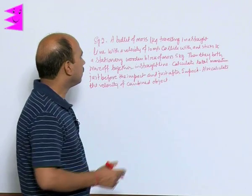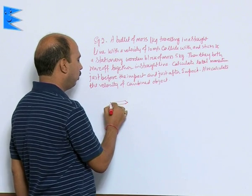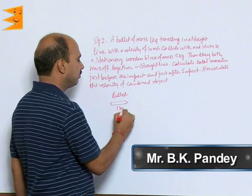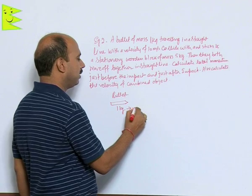So, see here, the bullet is coming like this. This is a bullet I have taken, whose mass is 1 kg, moving with the velocity of 10 meters per second.